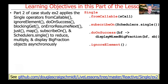Part two of this case study will apply Single operators like fromCallable, ignoreElement, doOnSuccess, blockingGet, onErrorResumeNext, just, map, subscribeOn, and Schedulers.single to reduce, multiply, and display big fraction objects asynchronously.